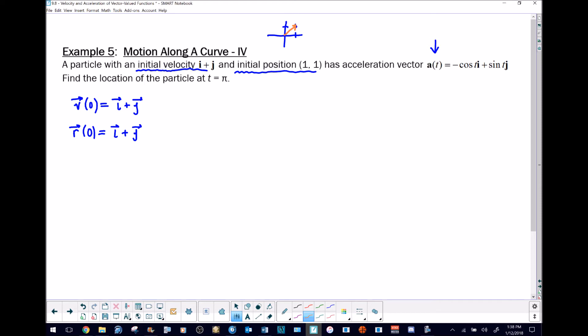The next step is to integrate this acceleration vector a(t) with respect to t, knowing that will provide the velocity vector. Integrating negative cosine, the antiderivative would give us negative sine. There is a constant of integration c1, and all of that is multiplied by vector i.